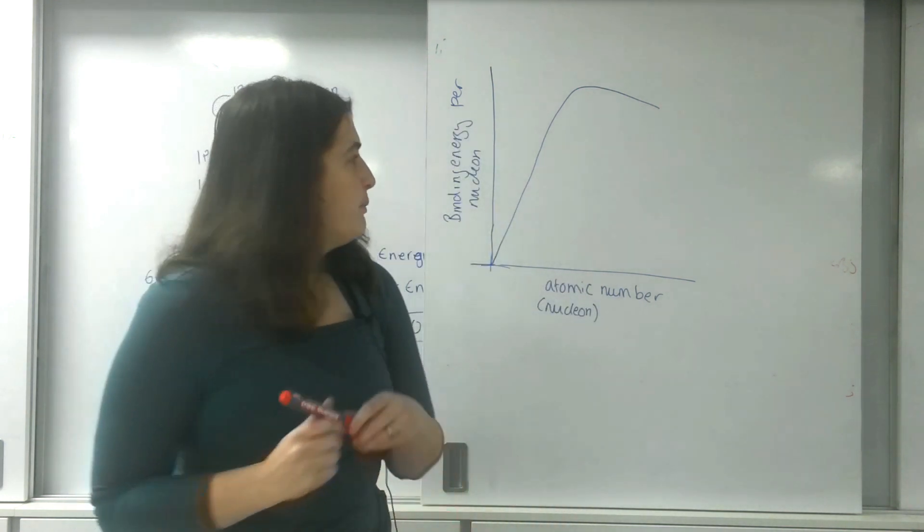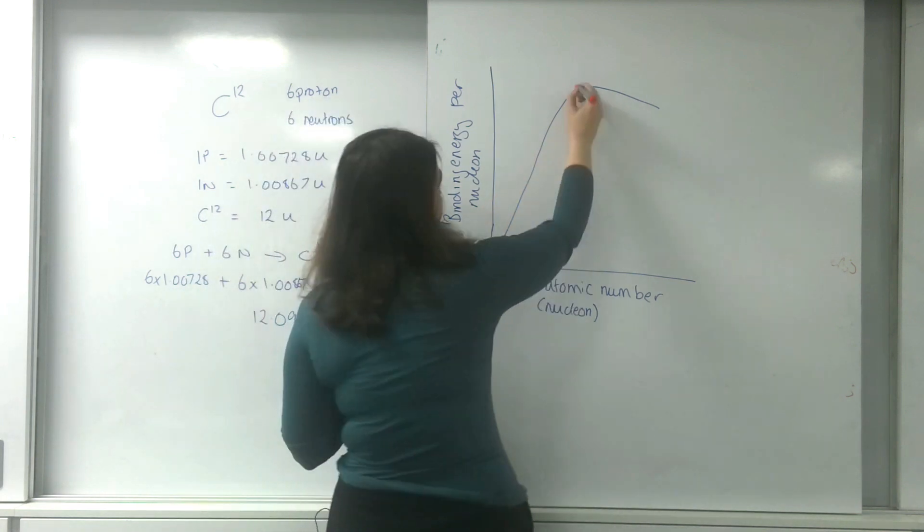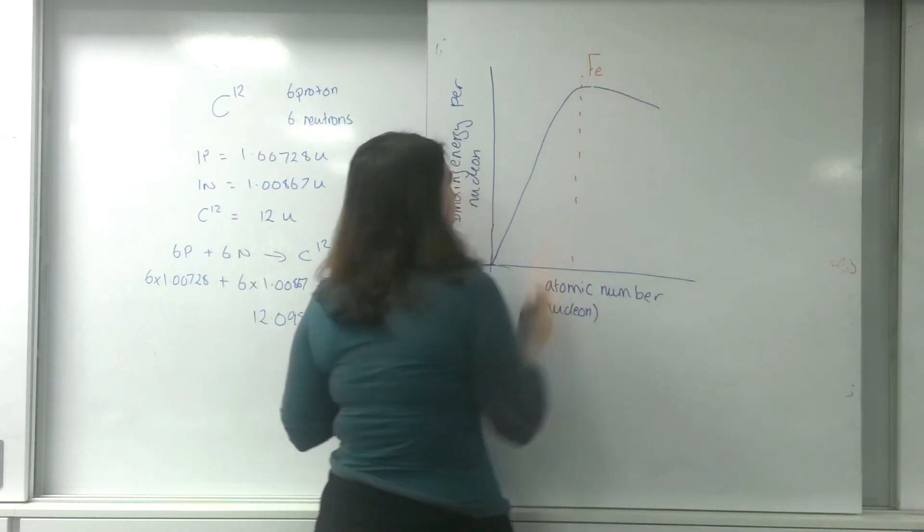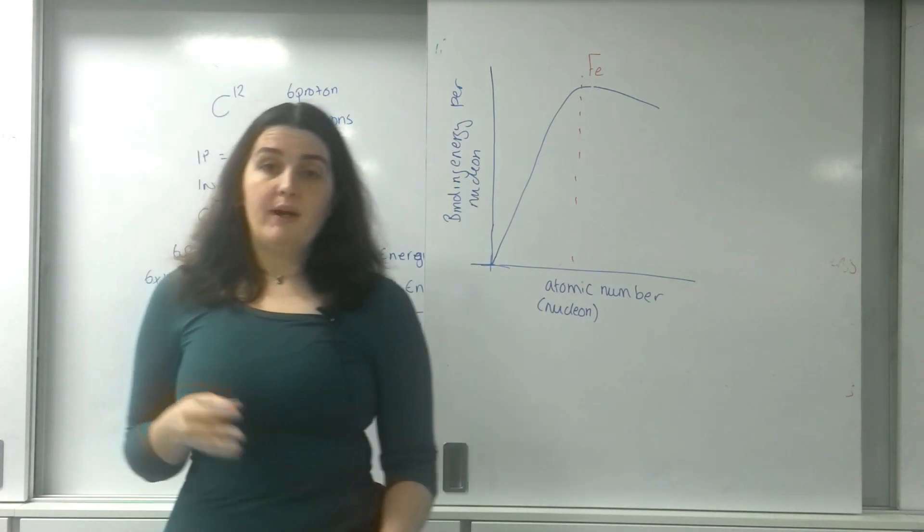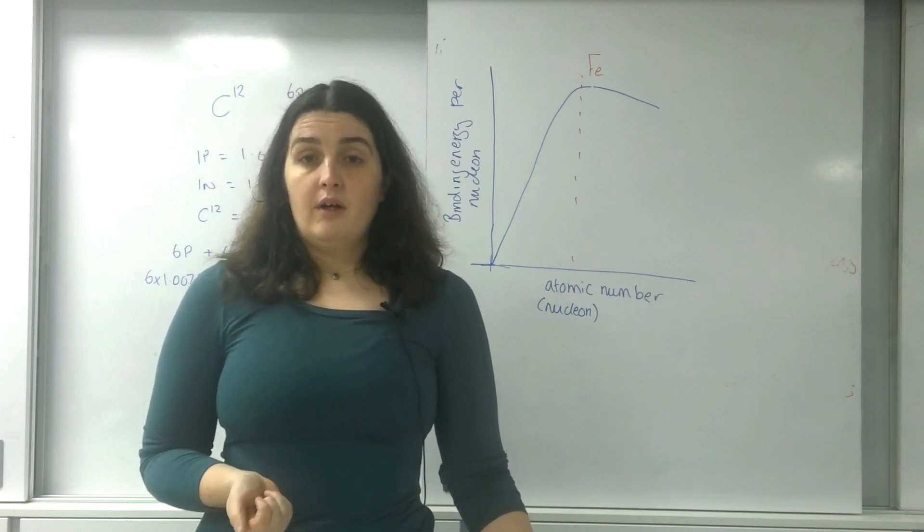The point on this graph which is most important for you is the peak, and that is iron. Iron is known as the most stable element. It is the element that has the highest binding energy per nucleon.